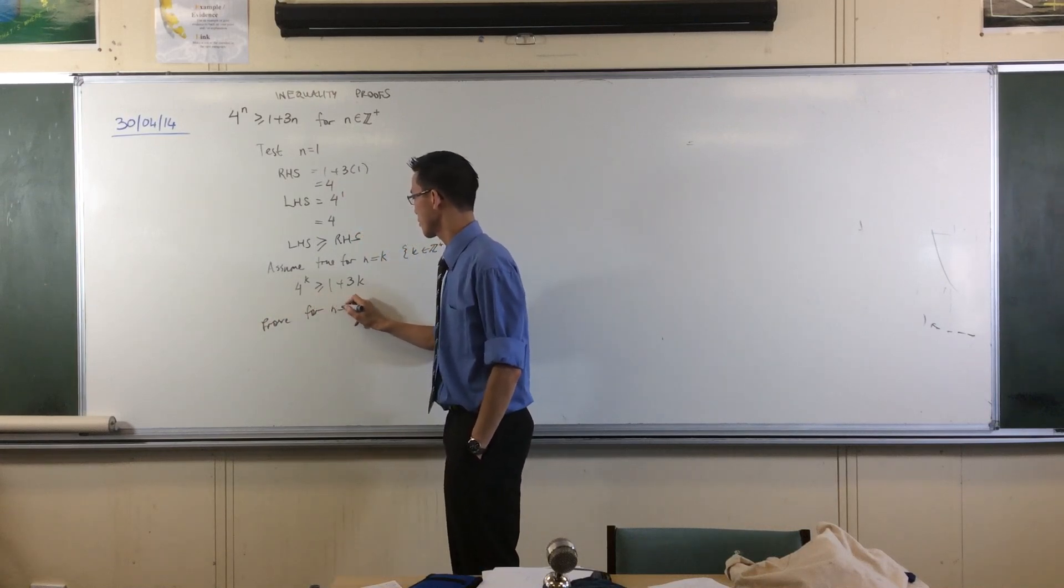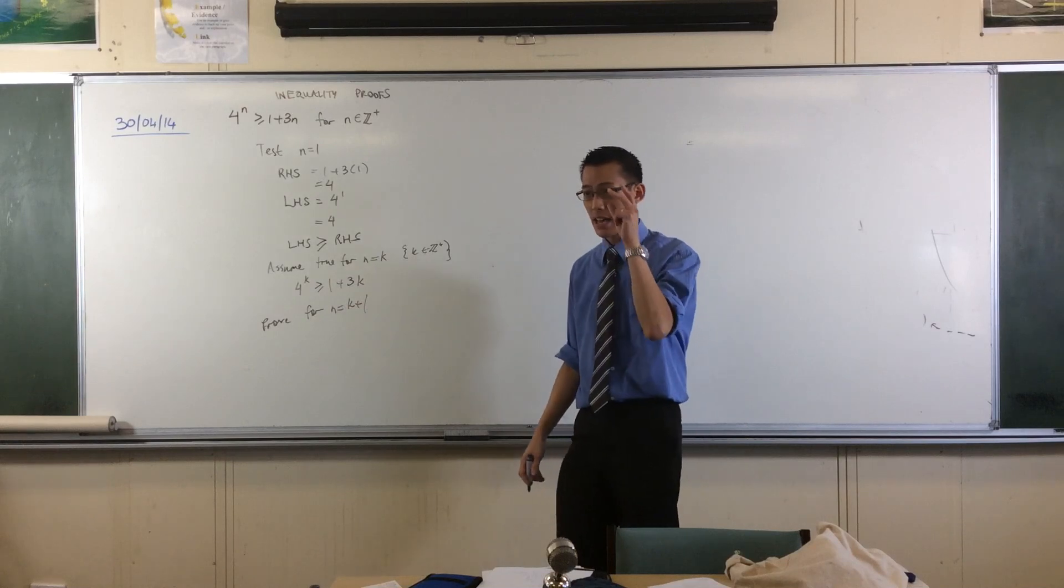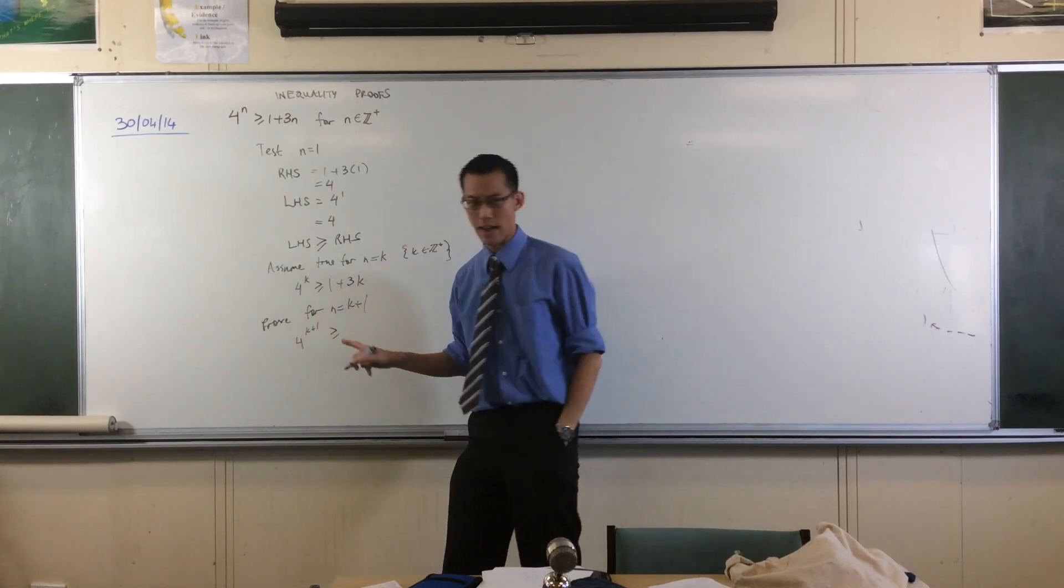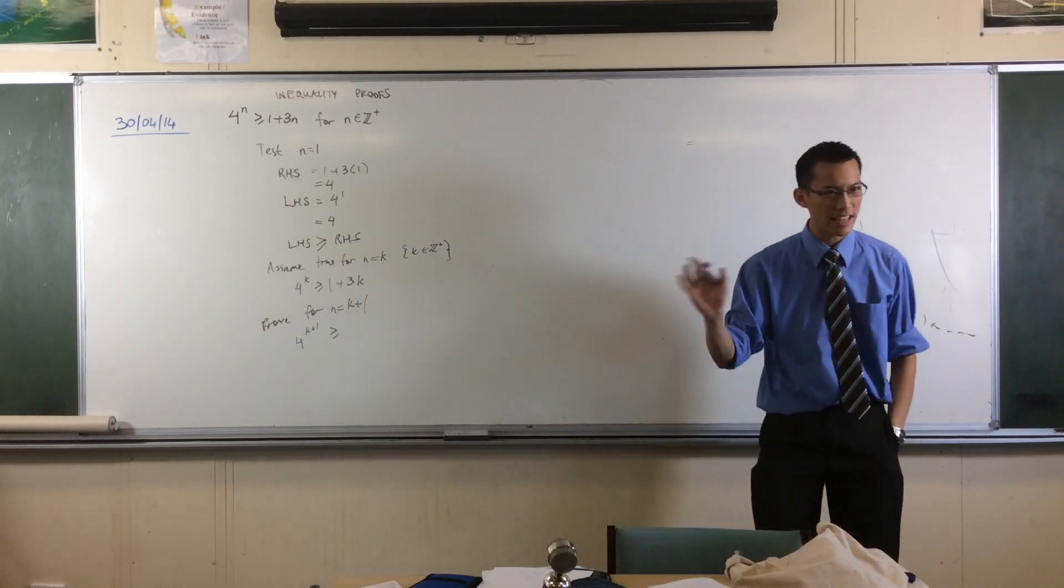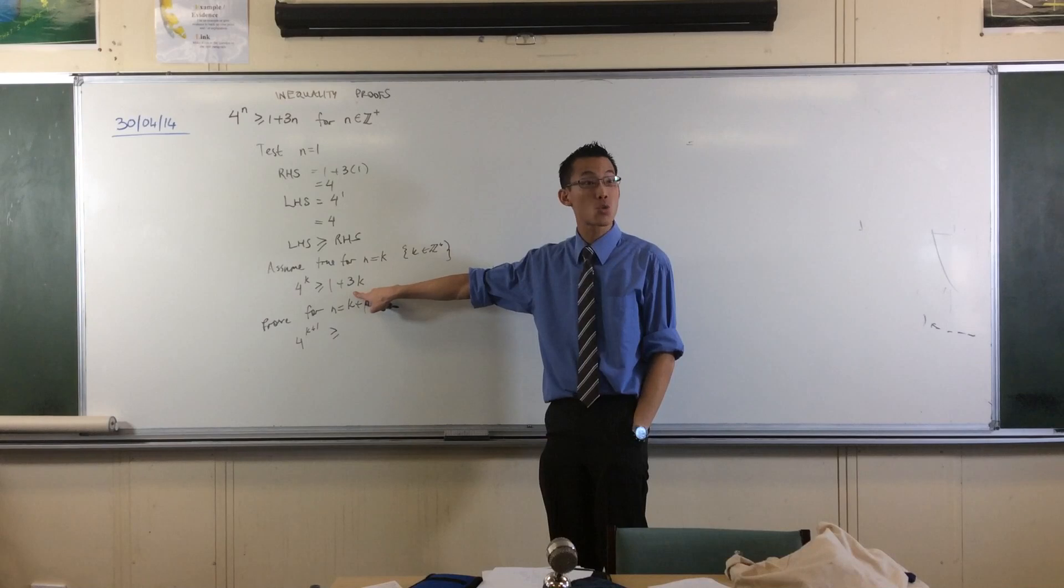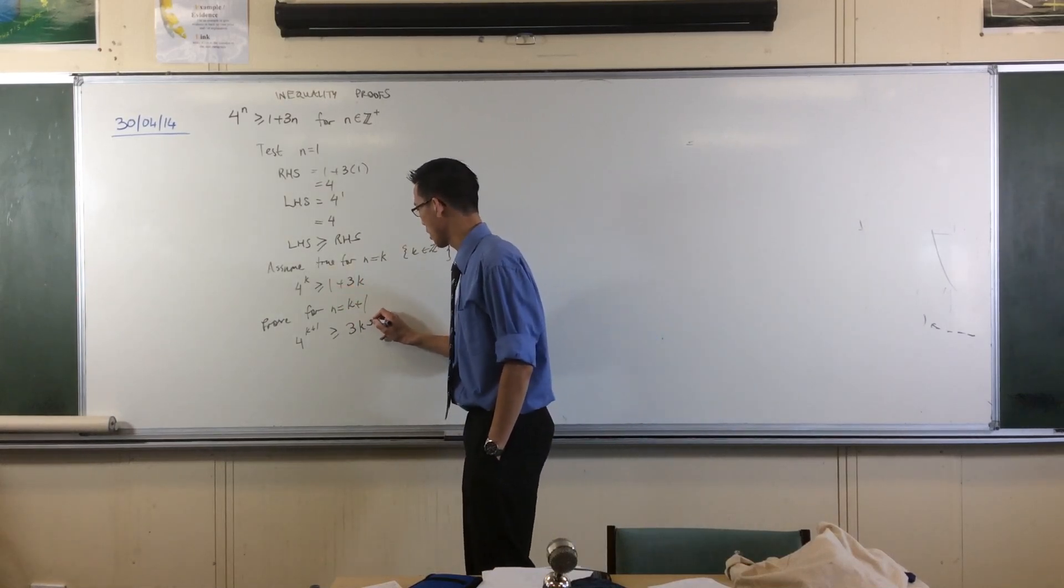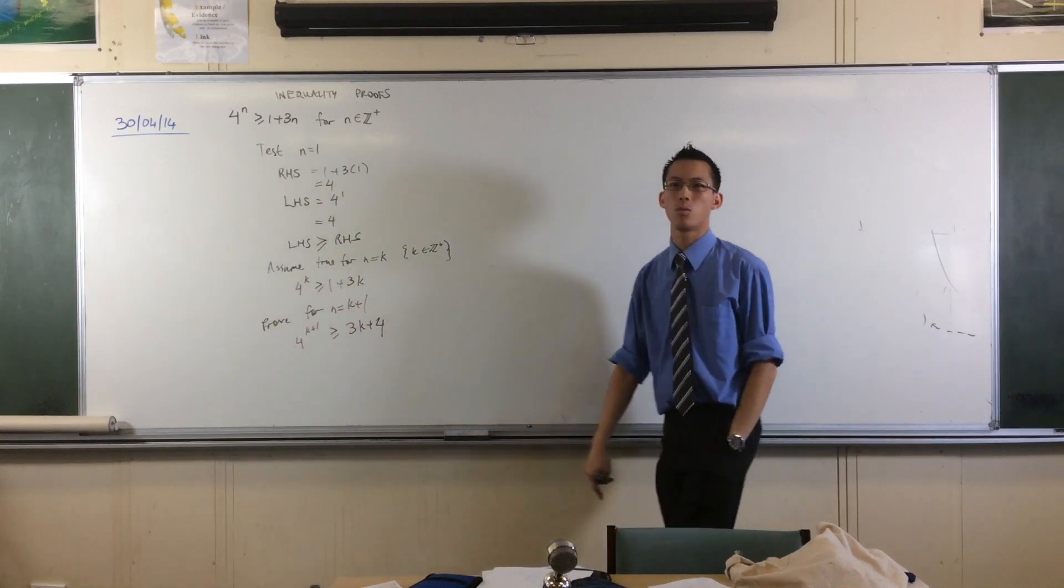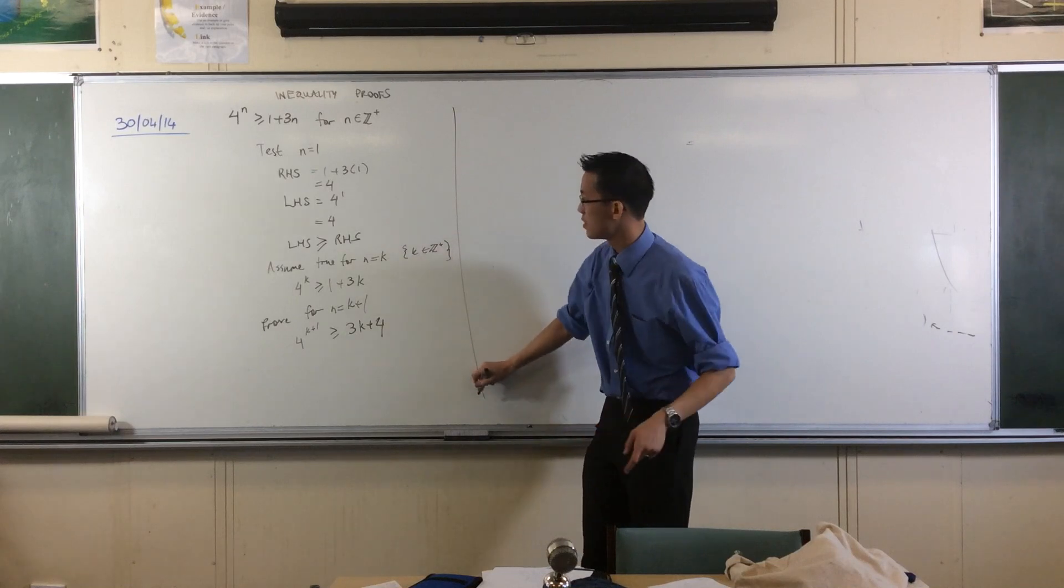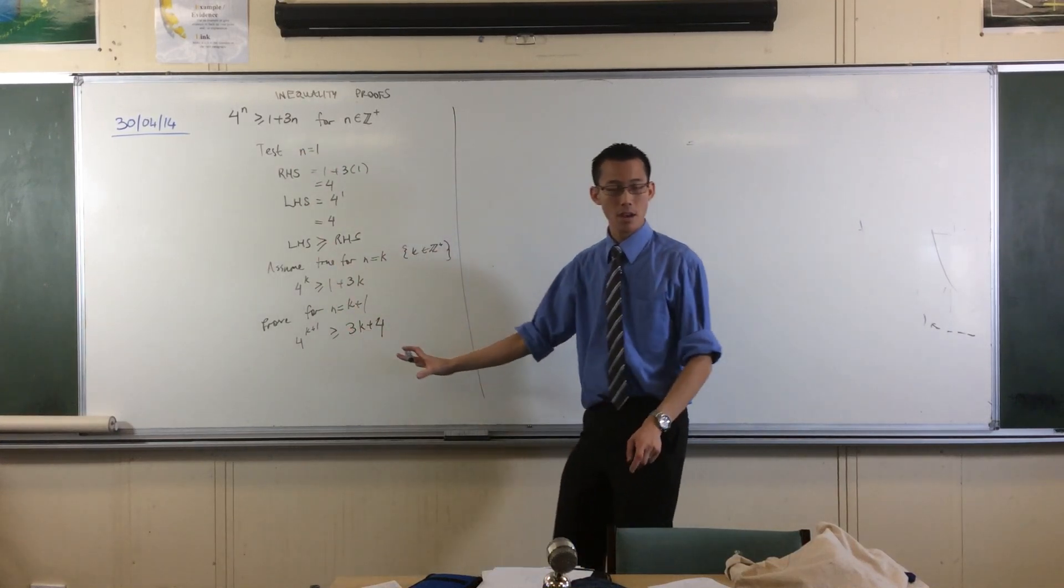Left-hand side, no problem. That's just sticking it in. What happens to the right-hand side when I collect like terms and that kind of thing? This guy's going to become what? 3k plus 3, plus 1. 3k plus 4. This is what I'm looking for. Now I said there's subtle differences in the different varieties of induction proofs and what happens in this step.